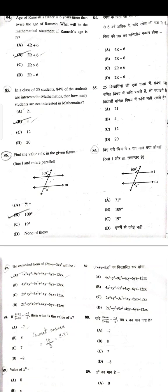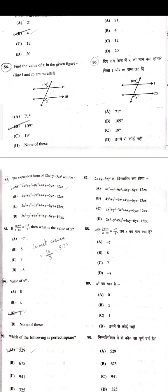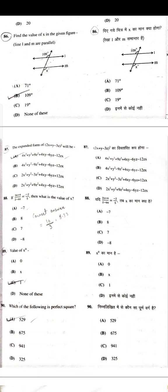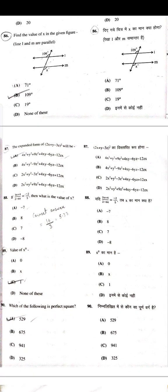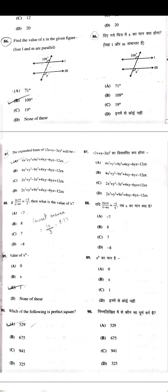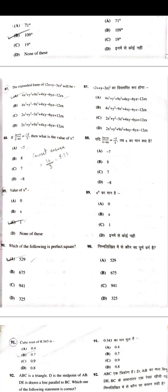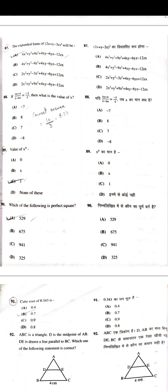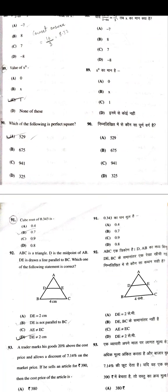In a class of 25 students, 84% are interested in mathematics — how many students are not interested — 4. Find the value of x in the given figure: the corresponding angles give 109°, so the answer is 71°. The expanded form of (2x+y-3z)² is 4x²+y²+9z²+4xy-6yz-12zx. Solving 3x+4/2-6x = -2/5 gives x = 5.33, but there is no correct option given, which is incorrect. Value of x⁰ = 1.